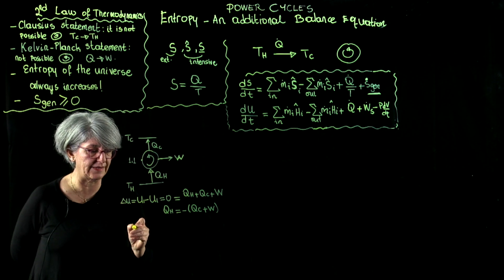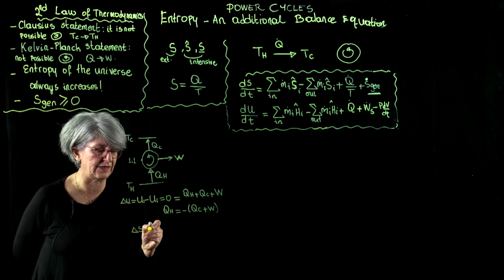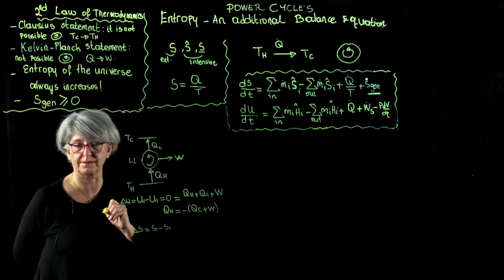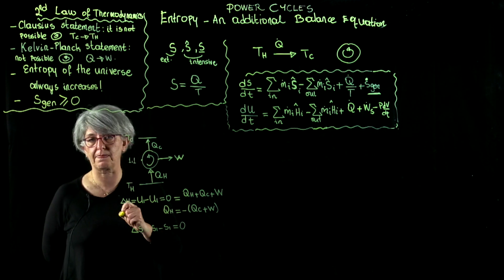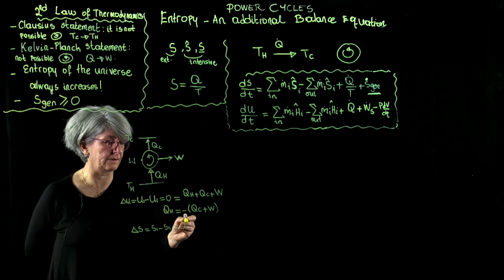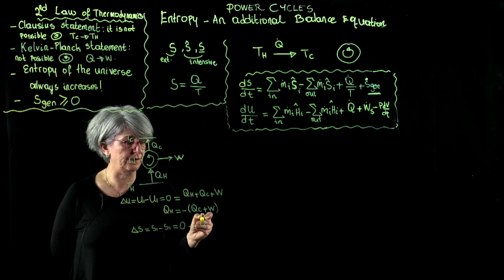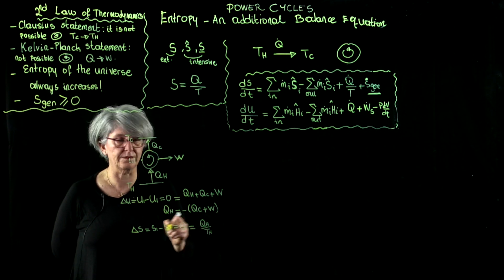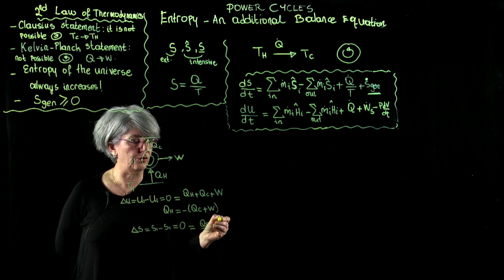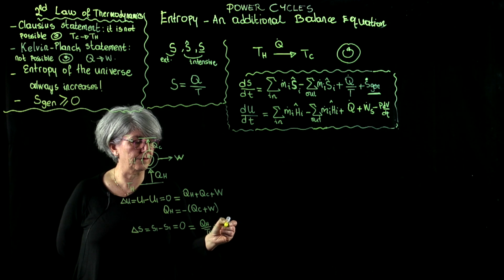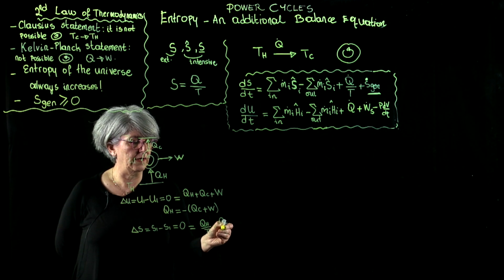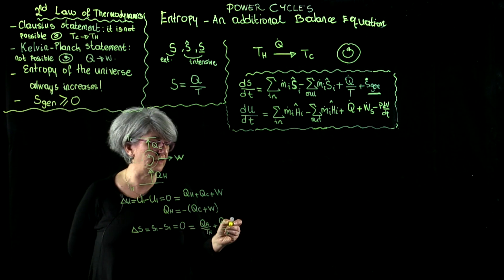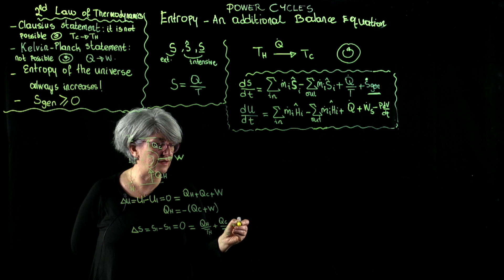From the second law analysis, delta s, which is s1 minus s1, is equal to zero. And that is equal to q hot over t hot, q cold over t cold. Remember that when we are writing the balance equations, we are not differentiating the sign. The sign declares itself, plus s generated.